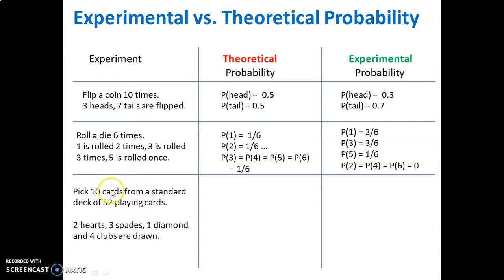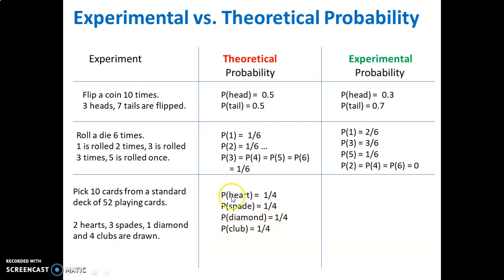Third example: you pick ten cards from a standard deck of 52 playing cards, and you get two hearts, three spades, one diamond, and four clubs. In theory, there are an equal number of hearts, spades, diamonds, and clubs in a deck — 13 of each, making a total of 52 cards. So there is an equal chance of getting each suit: 13 out of 52, which is a one in four chance. That's the theory.